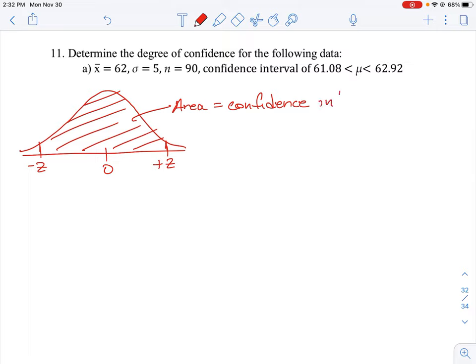Okay, and so usually we look at this as being like 90 percent, 95 percent, mostly the whole curve. So we are given a numerical interval here, 61.08 and 62.92.